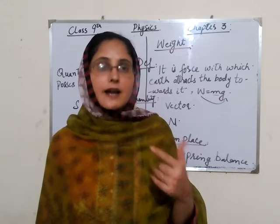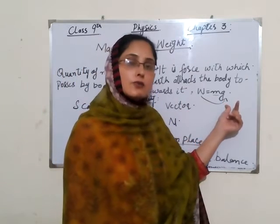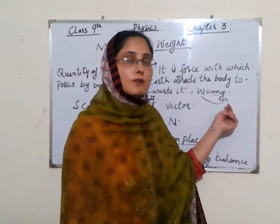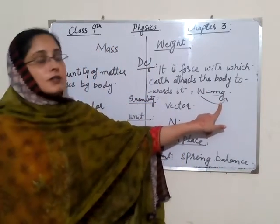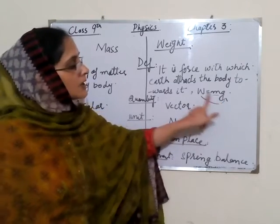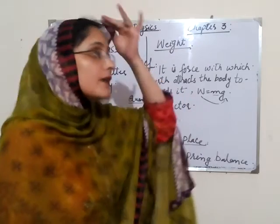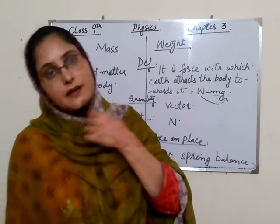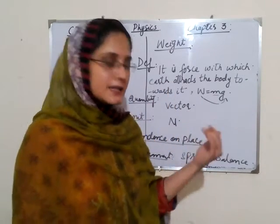Why does weight vary from altitude to altitude, from place to place? The answer is that weight depends upon acceleration due to gravity (g). Closer to the Earth, g is large so weight is large; away from the Earth, g is small so weight is small. Mass does not change from place to place, but weight does.